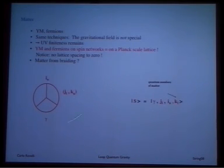Everything exists, in a sense, only at the Planck scale. So the theory is ultraviolet finite. This can be done with matter also. Nothing really changed substantially with matter. The gravitational field is not special here.